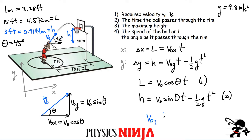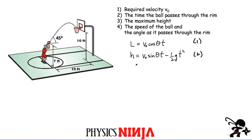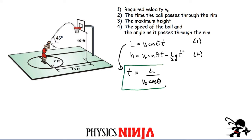We have two unknowns, v₀ and t, and two equations — all the physics is now set up. From Equation 1, we isolate time: t = L / (v₀ cos θ). We will substitute this expression into Equation 2 to eliminate t and solve for v₀ alone.